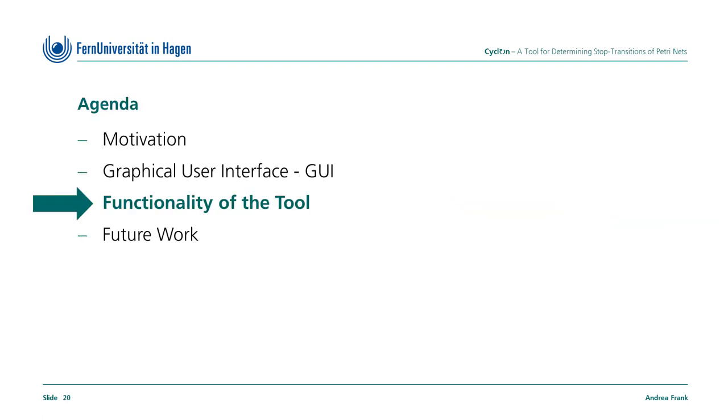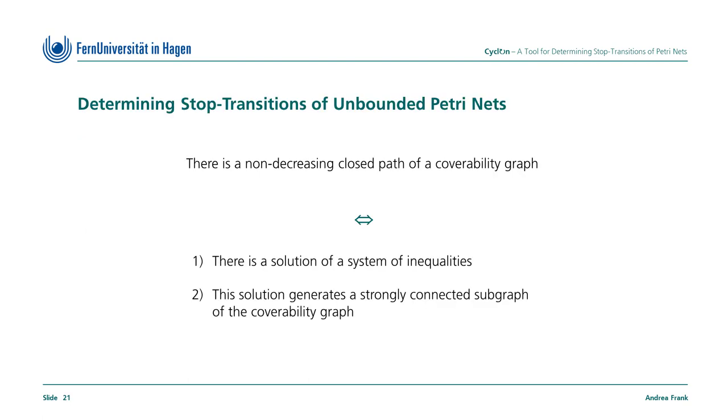Now, we come to the core functionality of the program. Before that, this theorem has to be mentioned. There is a non-decreasing closed path of a coverability graph of a Petri Net if and only if, first, there is a solution of a system of inequalities which I do not explain in detail here, and, second, this solution generates a strongly connected subgraph of the coverability graph.